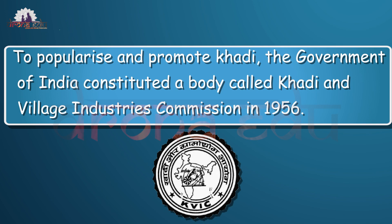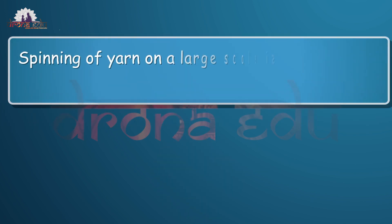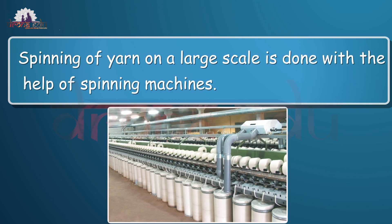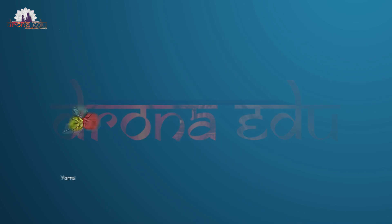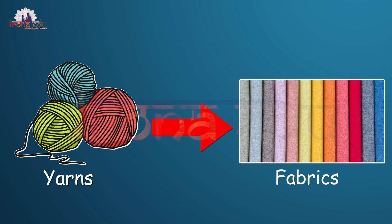To popularize and promote khadi, the Government of India constituted a body called the Khadi and Village Industries Commission in 1956. Spinning of yarn on a large scale is done with the help of spinning machines. After spinning, yarns are used for making fabrics.